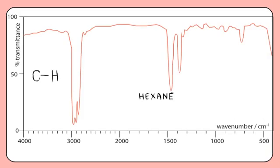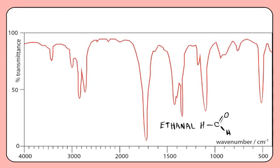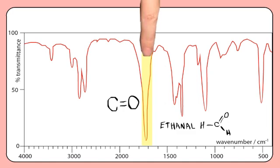The CH bond causes a series of sharp peaks between 2850 and 3100 centimetres to the minus 1. Consequently, most organic molecules will show peaks in this region. A very important peak that you must learn to recognise is the carbonyl C double bond O peak, which gives a strong absorption of infrared radiation between 1640 and 1750 centimetres to the minus 1. You can think of this as a finger.